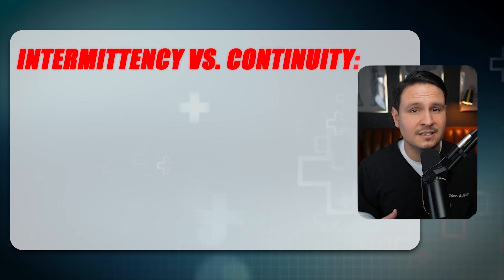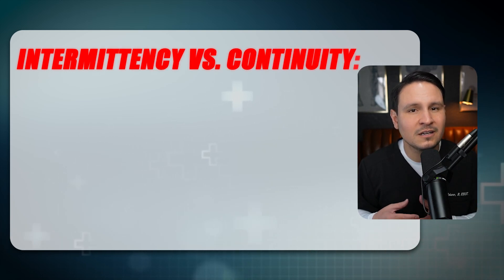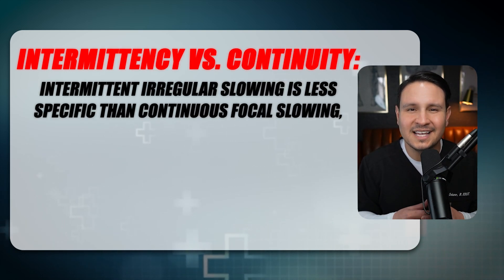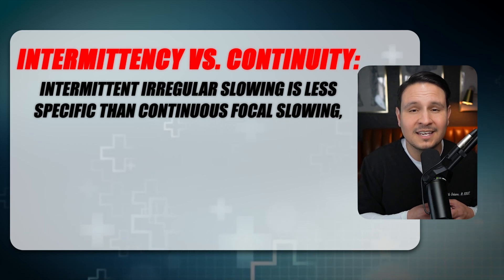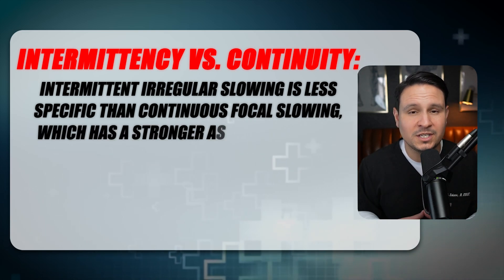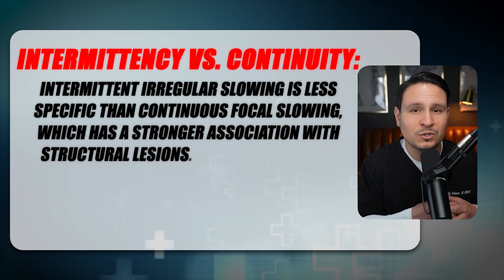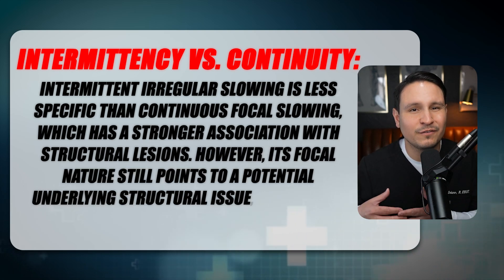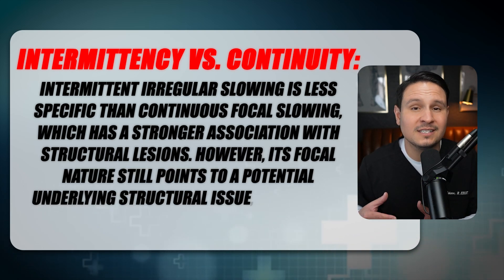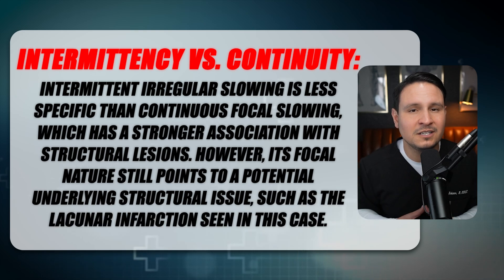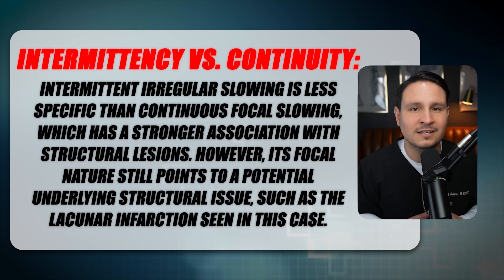Number three: intermittency versus continuity. Intermittent irregular slowing is less specific than continuous focal slowing, which has a stronger association with structural lesions. However, its focal nature still points to a potential underlying structural issue, such as the lacunar infarction seen in this case.